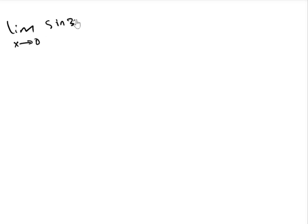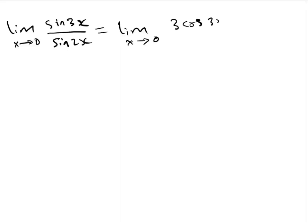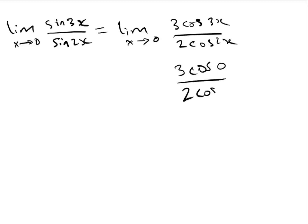This implies the limit as x approaches 0 of sin(3x)/sin(2x) equals the limit as x approaches 0 of 3cos(3x) divided by 2cos(2x). Plugging in x = 0, we get 3cos(0) divided by 2cos(0) = 3 × 1 divided by 2 × 1 = 3/2. That is our final answer.